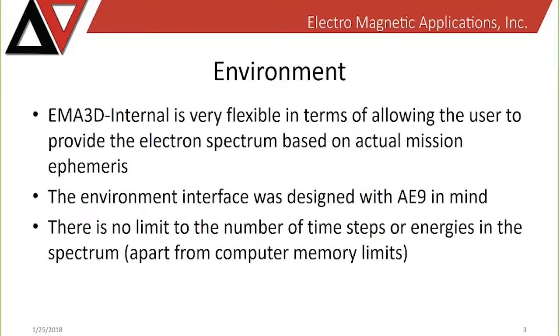EMA 3D internal allows the user to supply their own spectrum based on actual mission ephemeris. The interface was designed with AE-9 in mind, so a user can supply information about the energy distribution of electrons as well as the total flux over time. With no limit to the number of time steps or the number of energy bins allowed in the spectrum, the user can choose how much detail they wish to include about the space environment.